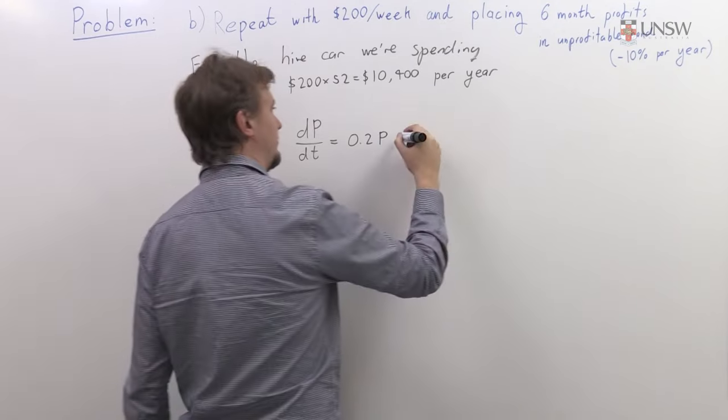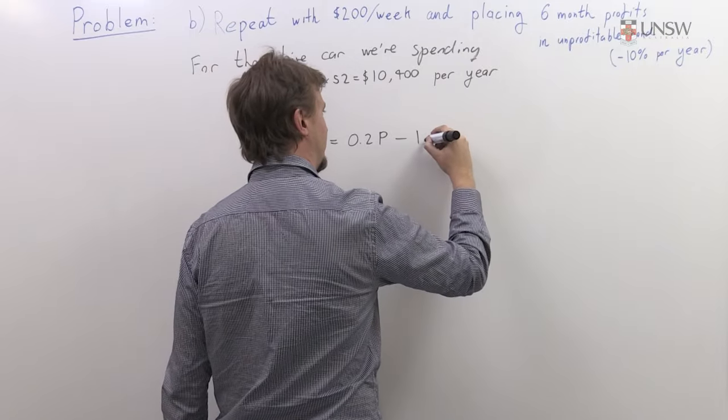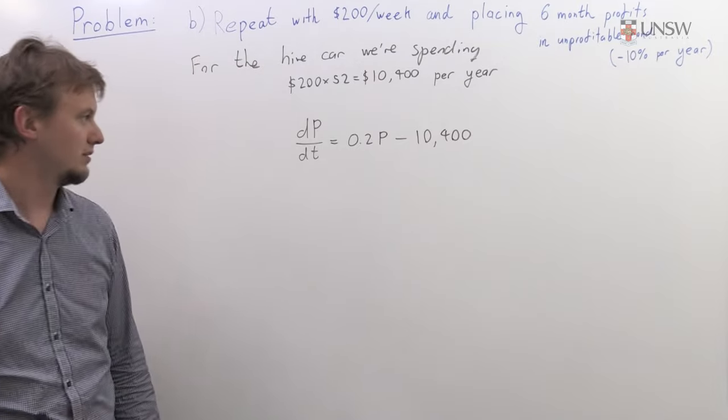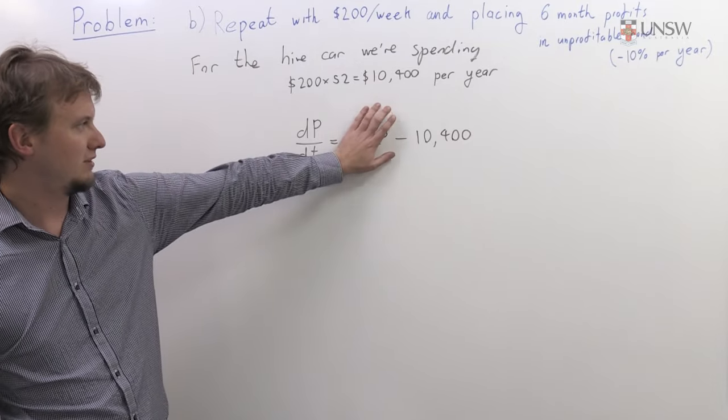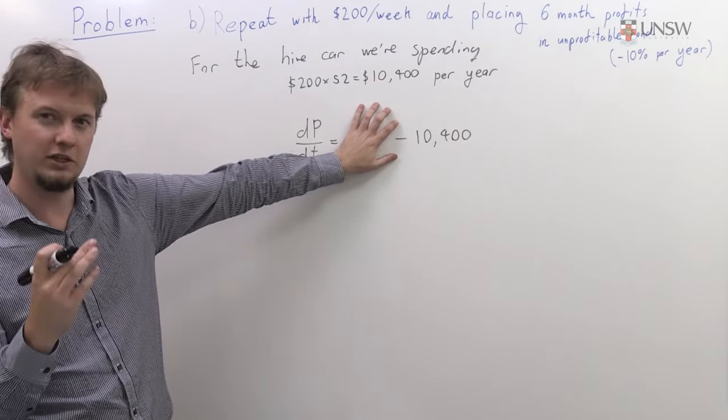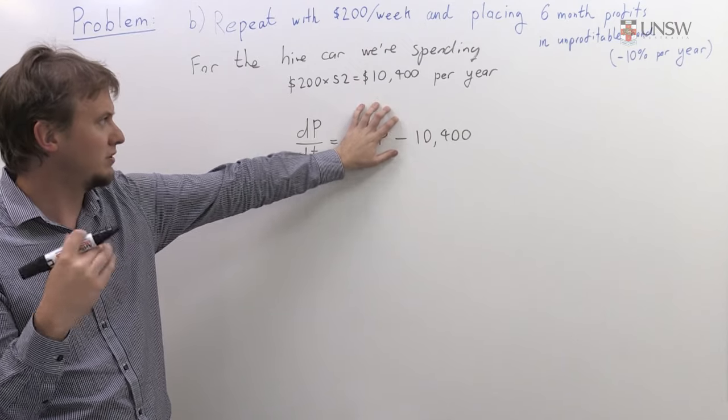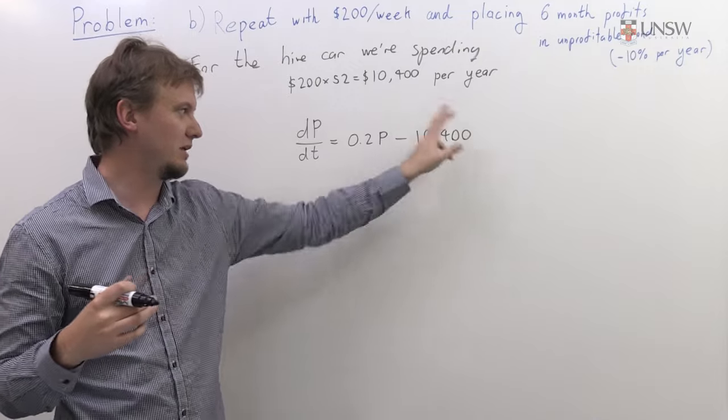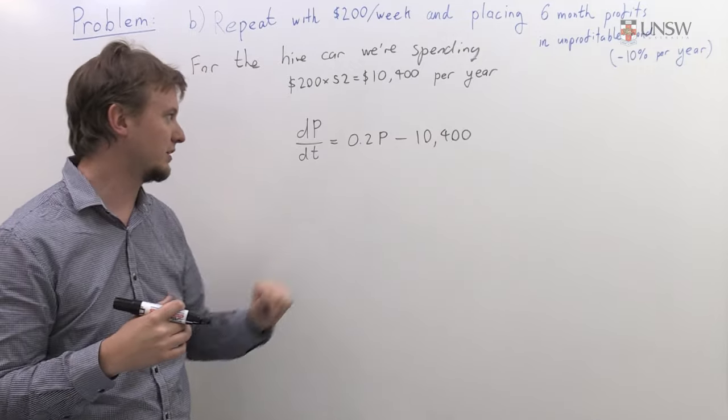You can see that if I just had this term here and I integrated the equation out for one year, I would just get this amount here. So this will actually spend the amount of money I need to spend on the car.